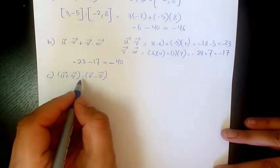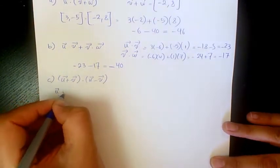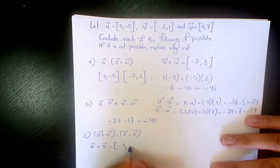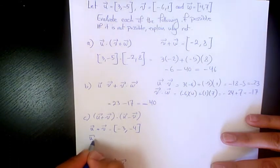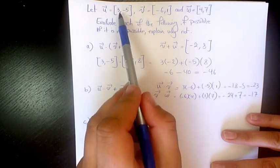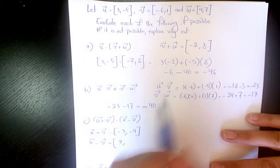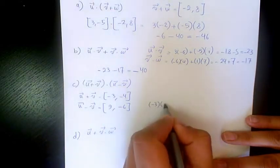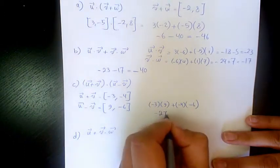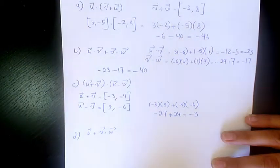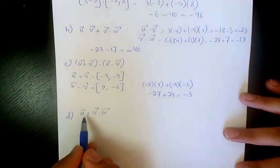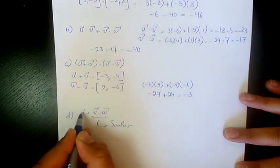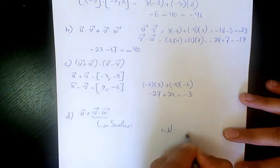Next, (u plus v) dot (u minus v). u plus v = (3-6, -5+1) = (-3, -4). u minus v = (3+6, -5-1) = (9, -6). Dot product: -3 times 9 plus -4 times -6 = -27 plus 24 = -3. After that, u plus (v dot w) is not possible because v dot w is a scalar and we cannot add a scalar to a vector.